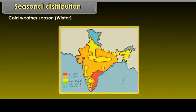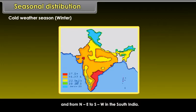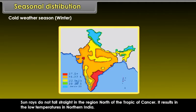During the cold weather season (winter), cold dry winds blow from the northwest to the southeast in north and northwest India, and from northeast to southwest in south India. Sun rays do not fall straight in the region north of the Tropic of Cancer, resulting in low temperatures in northern India.